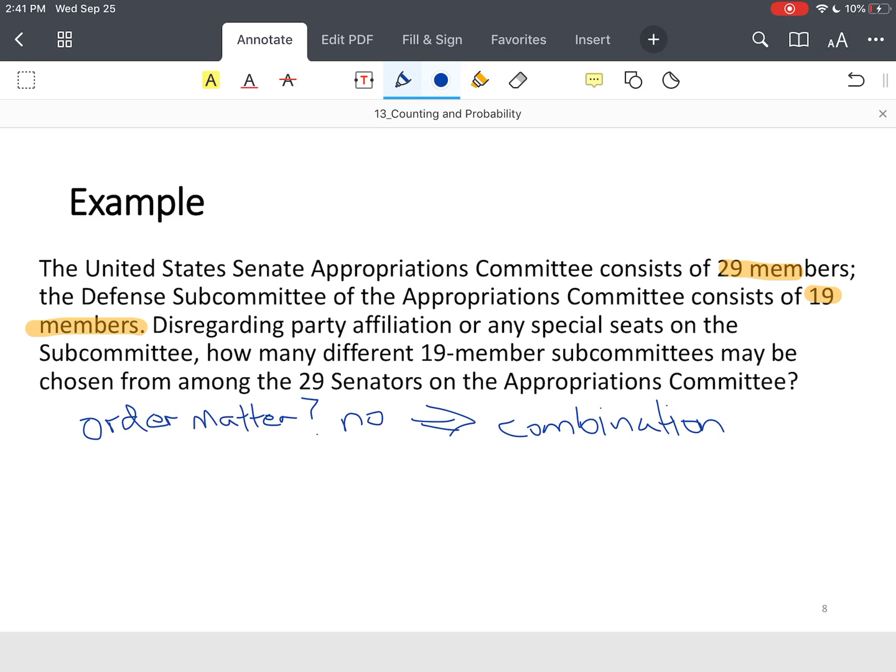So in this particular case, I've got 29 senators. It's a combination, and I want to choose 19 members.